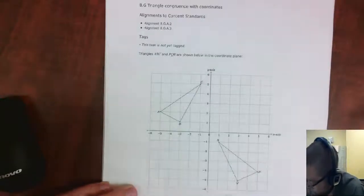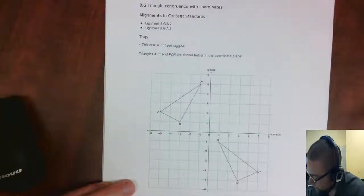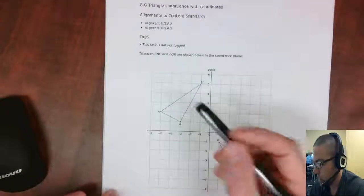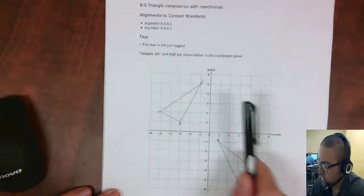So the way that I am going to do that, and it says here, show that ABC is congruent to PQR with reflection followed by translation. So they kind of give it to you there. They say we're going to reflect and translate.